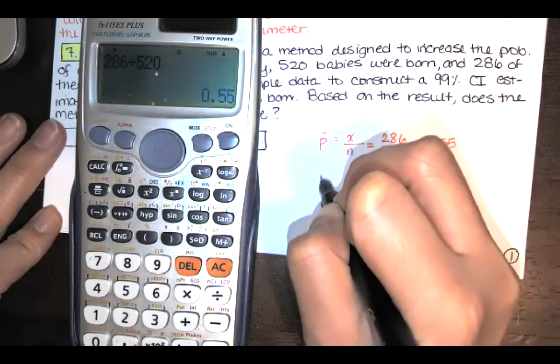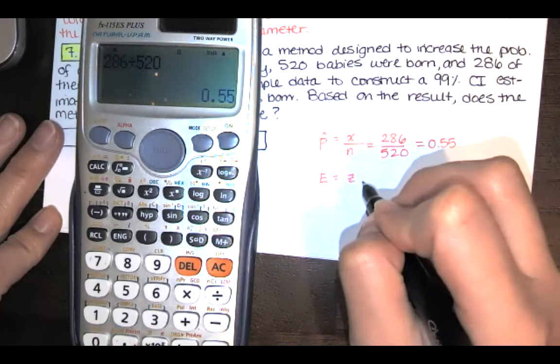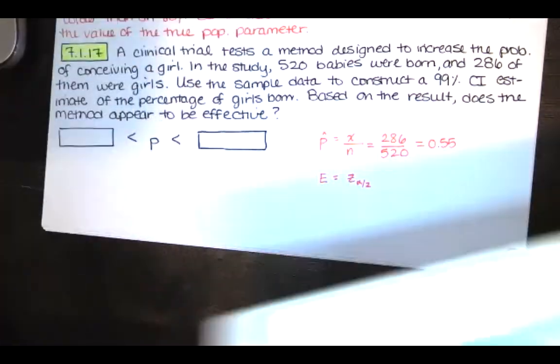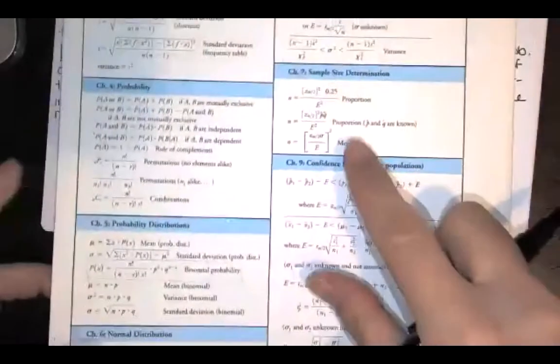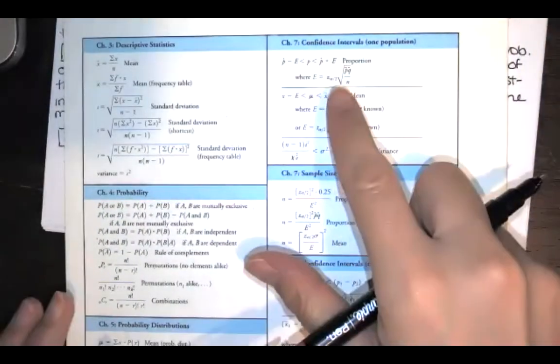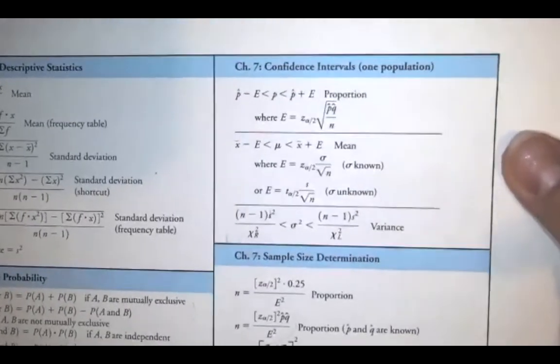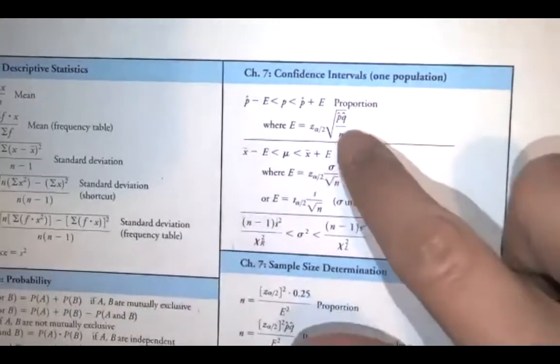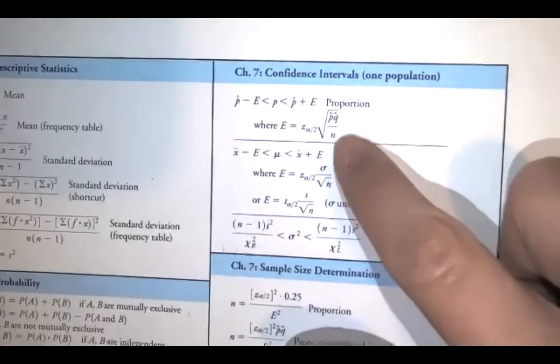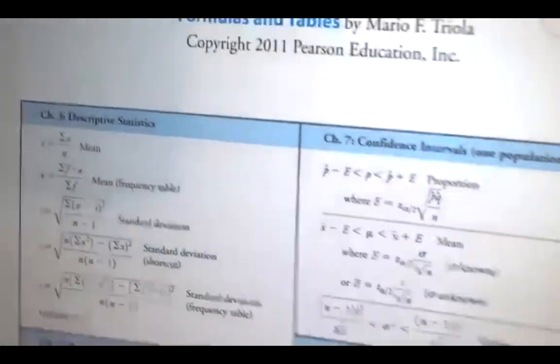And then we need the margin of error associated with a 99% confidence interval. So we want Z sub alpha over 2 times... We've got our formulas. This is the Triola formulas and tables. So this is our confidence interval for our proportion. And this is the margin of error. So we have Z sub alpha over 2 times the square root of P hat times Q hat over n.